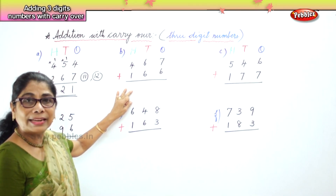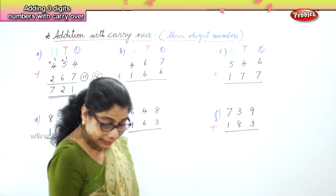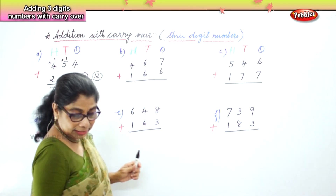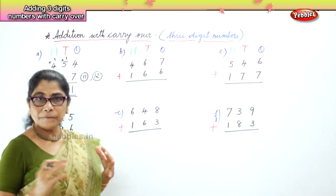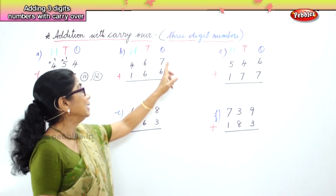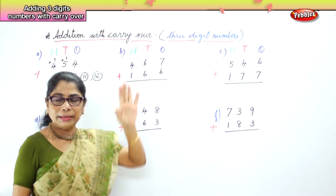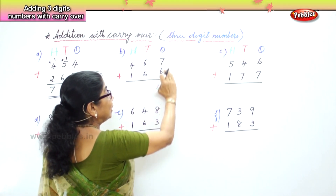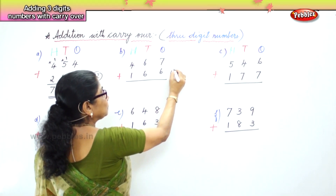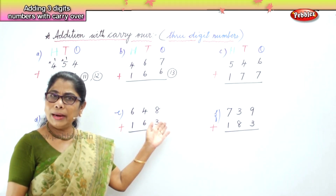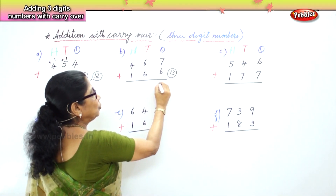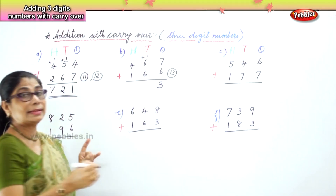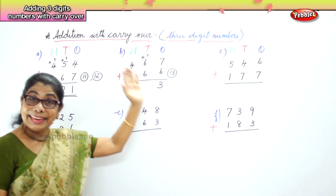Now the next sum: 467 plus 166. First, look at the ones place — 7 ones plus 6 ones. In your mind hold 7, count 6 more on your fingers: 8, 9, 10, 11, 12, 13. So 7 ones and 6 ones make 13 ones. 13 ones is 1 ten and 3 ones. Put 3 in the ones place and carry over the 1 ten to the tens place.